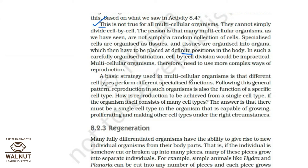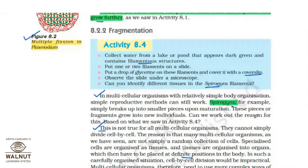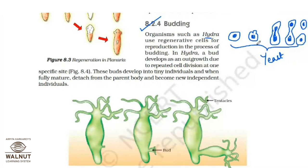A basic strategy in multicellular organisms is that different cell types perform different specialized functions. Reproduction is also the function of a specific cell type. There must be a single cell type capable of growing, proliferating, and making other cell types under the right circumstances — proliferating means growing and performing different functions. After this, you can go through budding in section 8.2.4. Hydra is the example in the book; yeast reproduction by budding is given in your PPT.